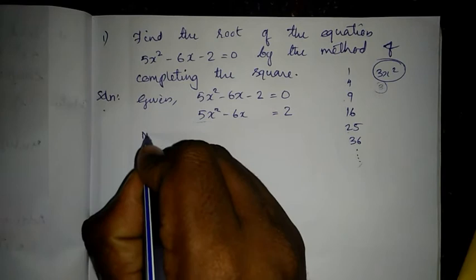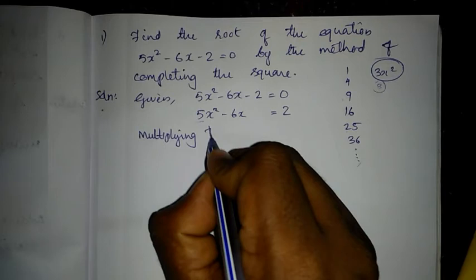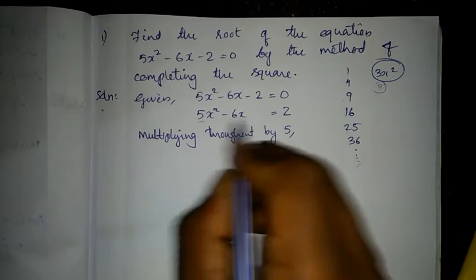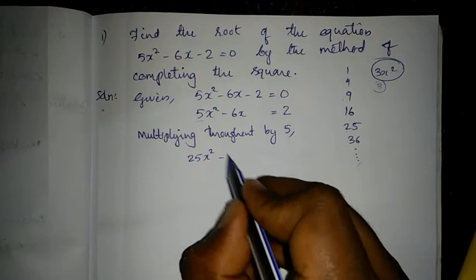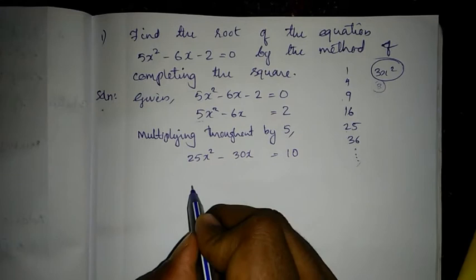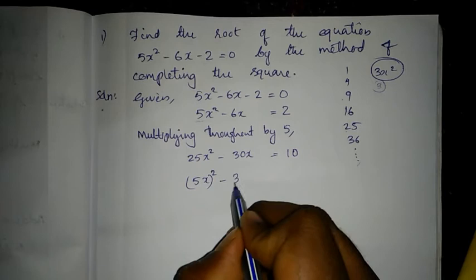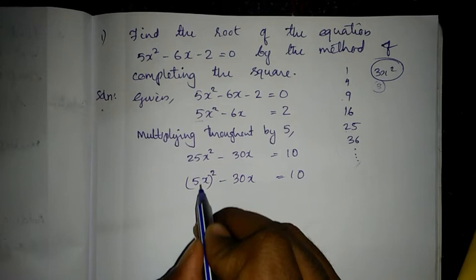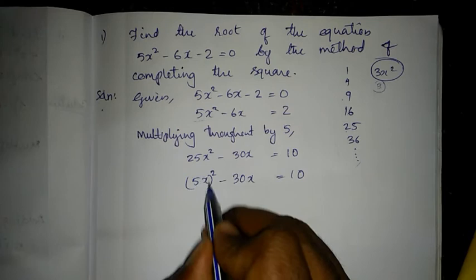Multiplying throughout by 5, we get: 25x² minus 30x = 10. This gives us (5x)² minus 30x = 10. We must always write the coefficient of x² as a perfect square — as one number squared — so the whole first term becomes one bracket, like (5x)².